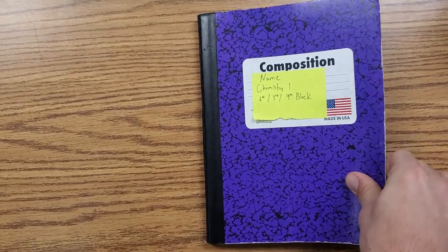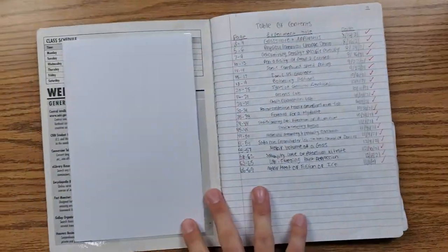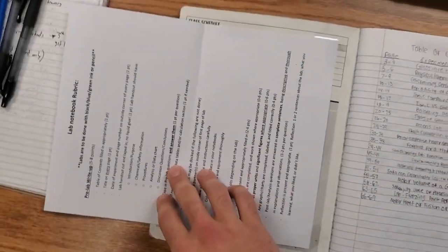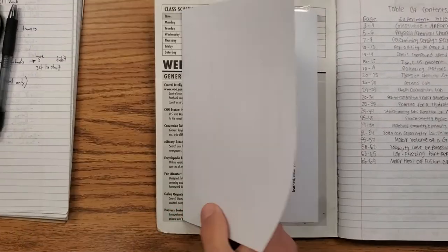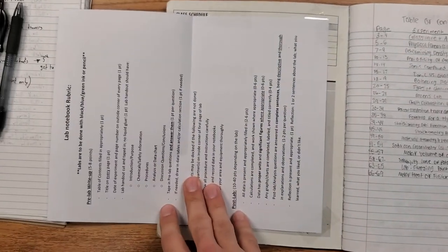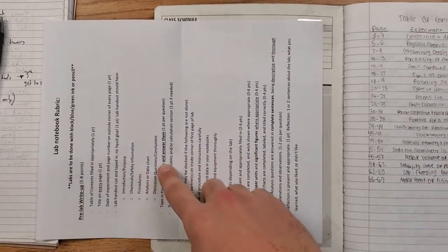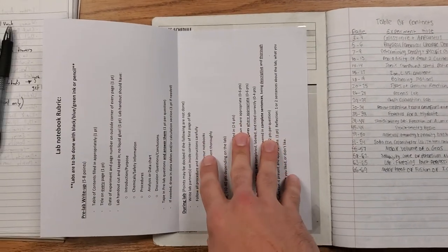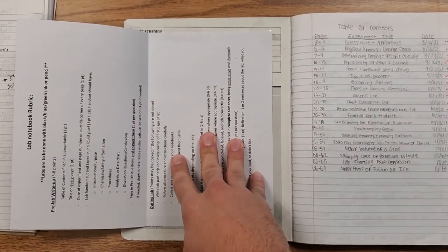Then for the inside, things get a little bit more interesting. We are going to have our lab rubric that is going to be taped inside. You'll notice how this one is folded in half and then it's taped so that you can open it up and you can see what all is going to be required for lab. So that's the first thing. If you don't have this, just wait until you're in class and you can pick this up.